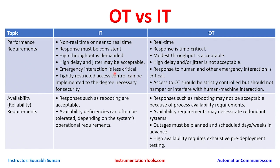In IT, emergency interaction is less critical. In OT, response to human and emergency interaction is critical. In IT, tightly restricted access control can be implemented to the degree necessary for security, since confidentiality is of utmost importance. In OT, access should be strictly controlled but must not hamper or interfere with HMI — human machine interaction. If an operator needs to access a system, access control cannot be so tight that it causes difficulties and leads to delays in operations.